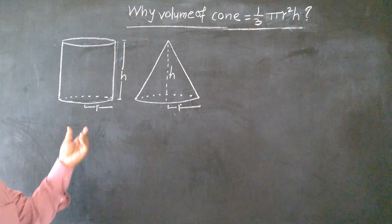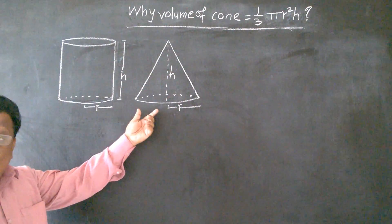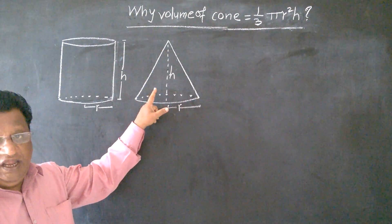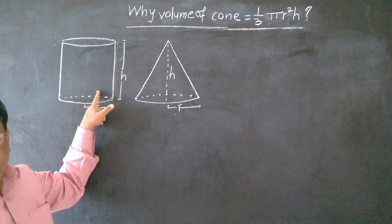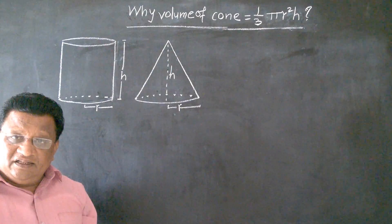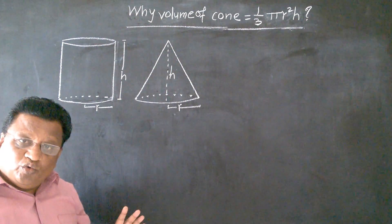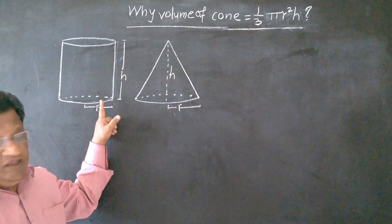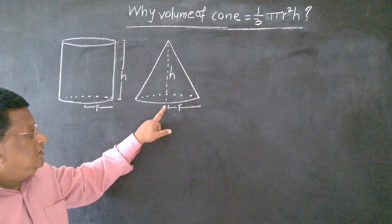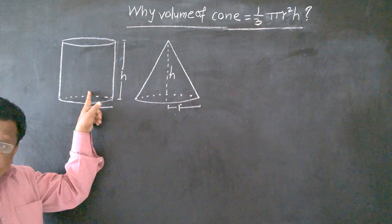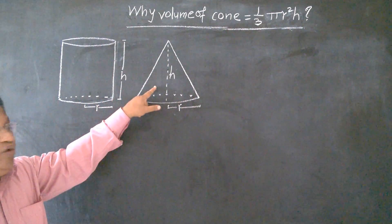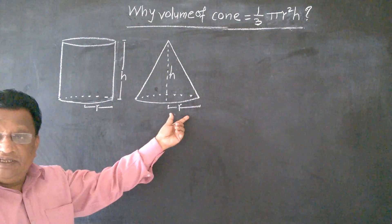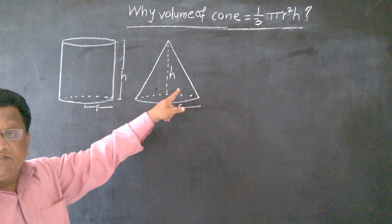Now, if this cylinder is empty and this cone is empty, if you fill this cone with water and pour it in this cylinder, you will find that you have to do same thing for three times. It means that volume of this cylinder is three times the volume of this cone, only when the radius is same and height is same.